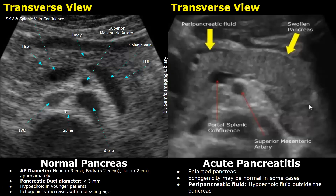Here is another case of acute pancreatitis. We can clearly see a swollen, enlarged pancreas. The echogenicity appears normal, but the gland appears enlarged and there is hypoechoic peripancreatic fluid.